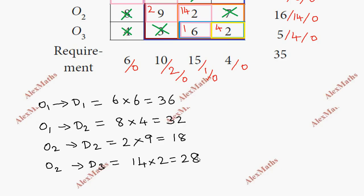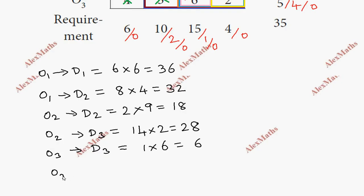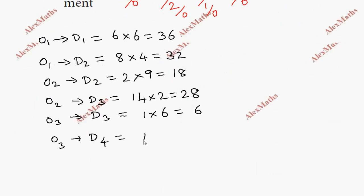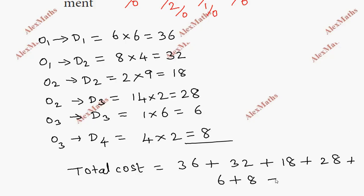O3 to D3: 1 unit, cost per unit is 6, so 1 times 6 equals 6. O3 to D4: 4 units at cost per unit 2, so 4 times 2 equals 8. The total cost is the sum of all these: 36 plus 32 plus 18 plus 28 plus 6 plus 8. The total equals Rs. 128.